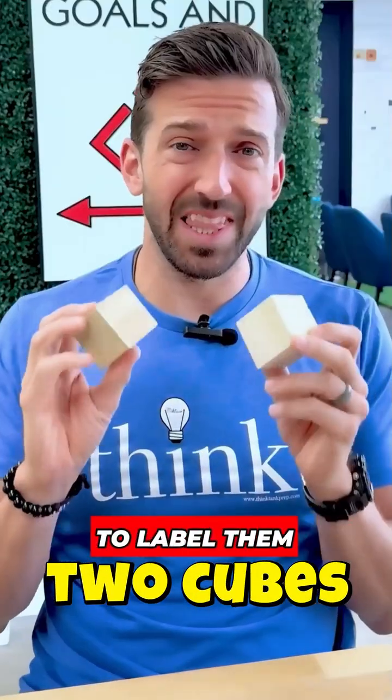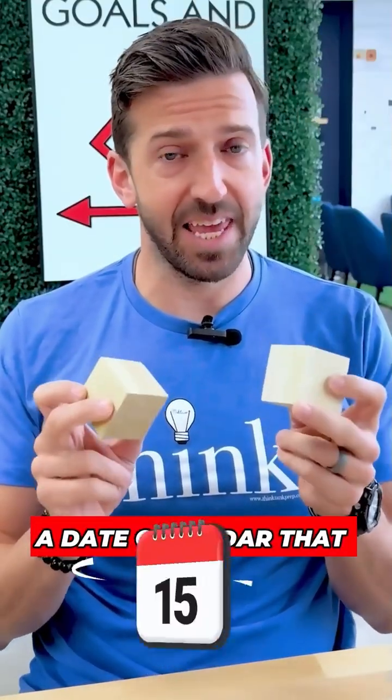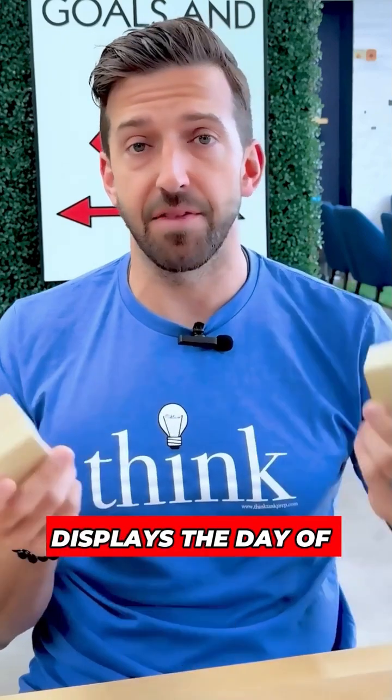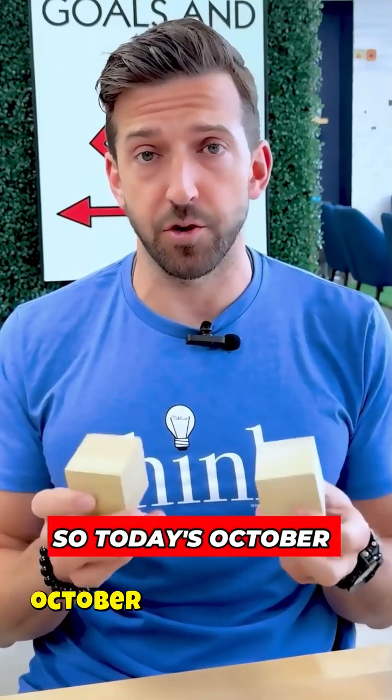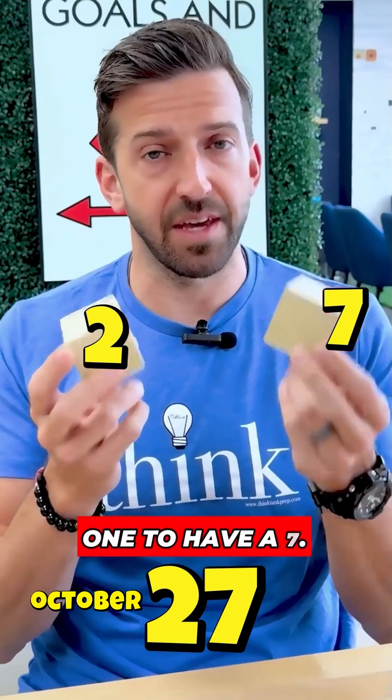Suppose you have two cubes and you want to label them so that you can make a date calendar that displays the day of the month that it happens to be. So today's October 27th, we'd need this block to have a two and this one to have a seven.